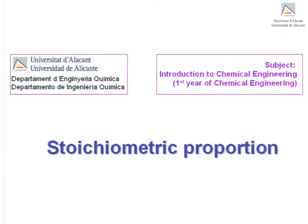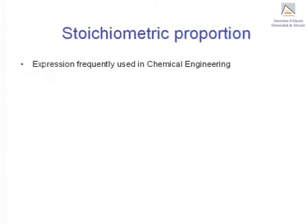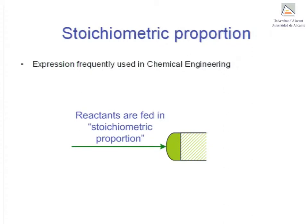Stoichiometric proportion. A common concept that is encountered in chemical engineering is that of stoichiometric proportion. For example, one frequently comes across the sentence: reactants are supplied in stoichiometric proportion in problem statements.